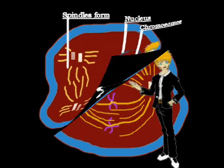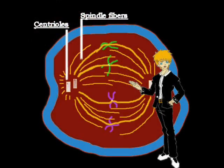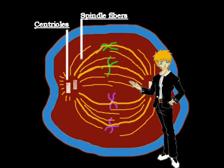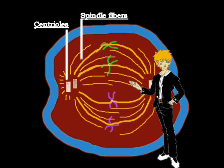As the cell moves to metaphase, the chromosomes line up at the equator, or the center of the cell. The spindle fibers attach to the centrioles and the centromeres, which hold together the chromatids.